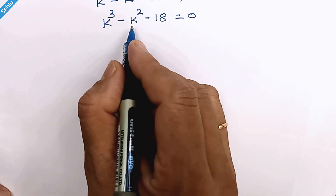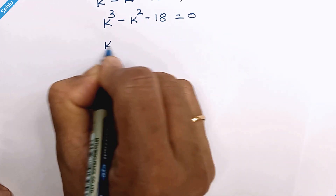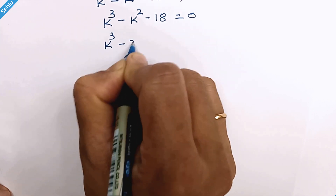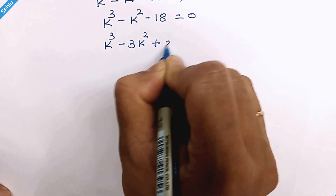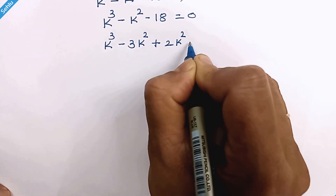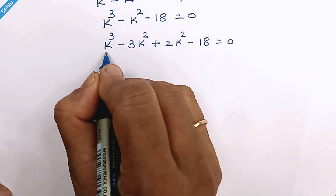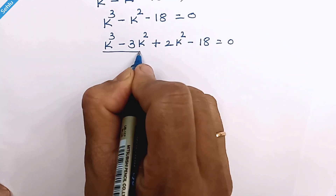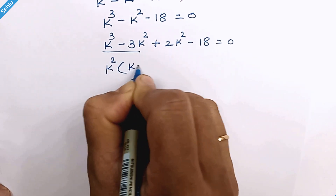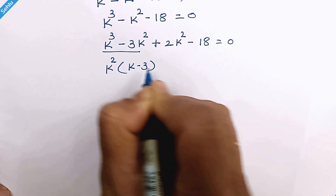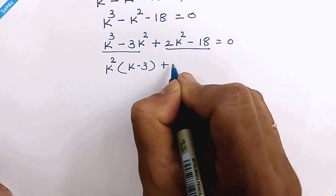Now let's substitute minus k square with minus 3k square plus 2k square. We can factor out k square from here, so it will be k square times k minus 3, plus we can factor out 2 from the remaining terms.